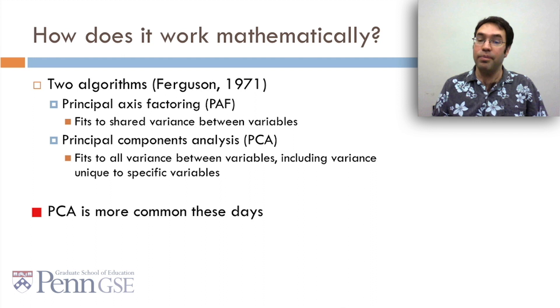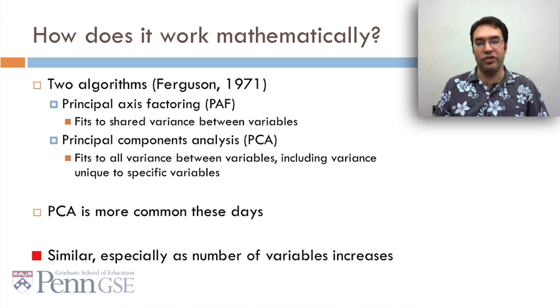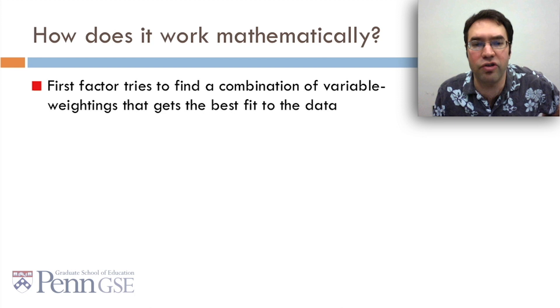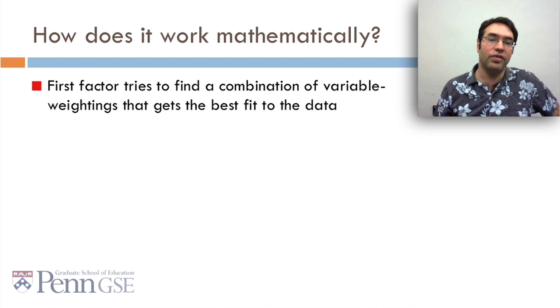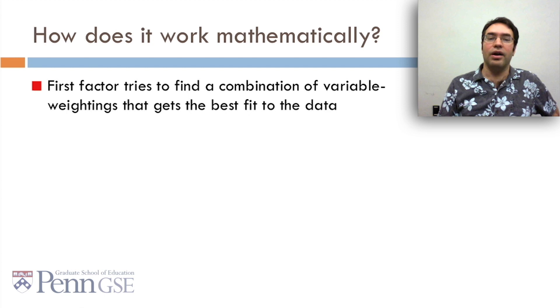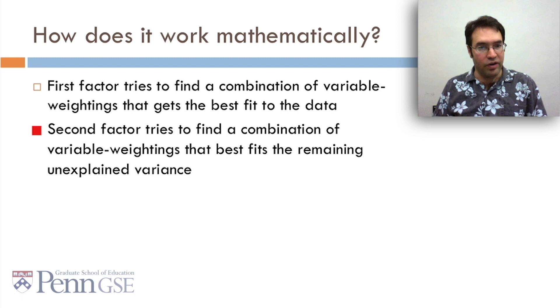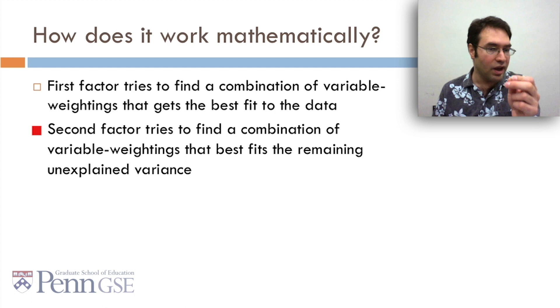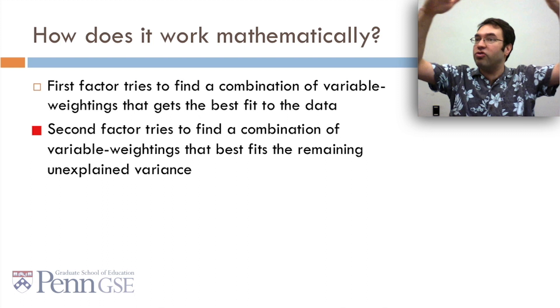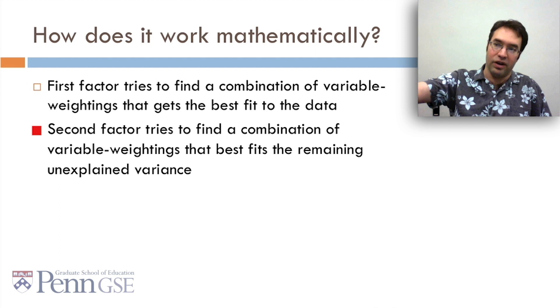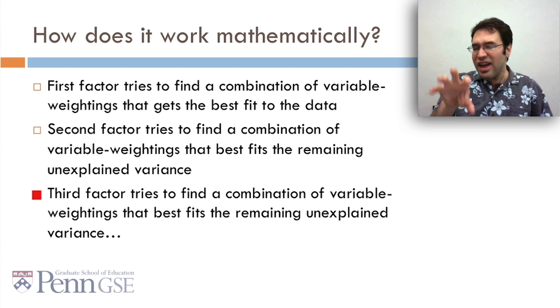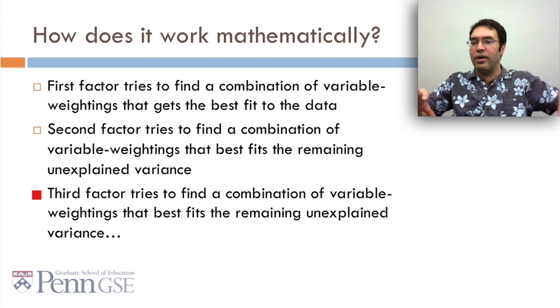So how does it work mathematically? Well, the first factor tries to find a combination of variable weightings, that is those numbers you remember in that table, that best fit the data. So we're going to try to say, how can we most predict the variance in the data by finding a combination of variable weightings on the various variables. And then we take what's not fit. We take the residuals. We take the remaining unexplained variance. And the second factor tries to find a combination of variable weightings, another linear regression equation, that best fits that. So imagine you're doing a linear regression. The first type of factor analysis is just do a linear regression. And then take all the variance from that linear regression, all the unexplained variance, all the residuals, and fit a linear regression equation to fit that. And then, after you've done the second factor, take all the remaining variance, everything you haven't fit so far, all the residuals, and try to fit that with another linear regression equation. And you keep doing that until you can't fit anything more.